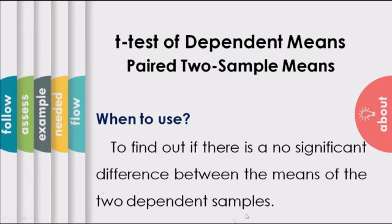The two dependent sample talks about one group, meaning the data are coming from one group, which is the data before and the data after.